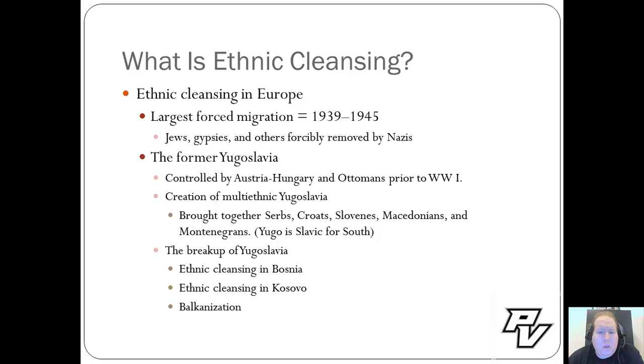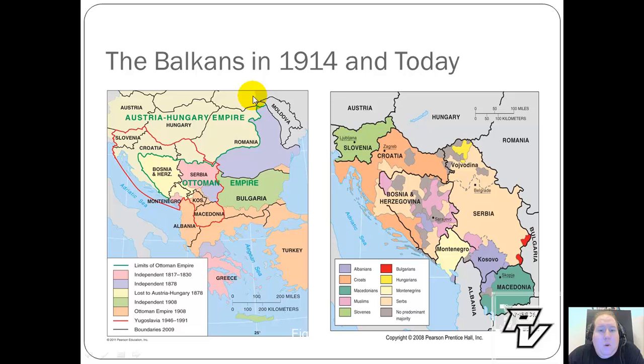Yugoslavia itself was controlled by both Austria-Hungary and the Ottoman Empire prior to World War I. Austria-Hungary controlled the northern and western portions, while the Ottoman Empire controlled the south and east. Today, if you look at the maps, you can see the overlap of both states and ethnicities — Bosnia-Herzegovina especially, as well as Croatia and Serbia.